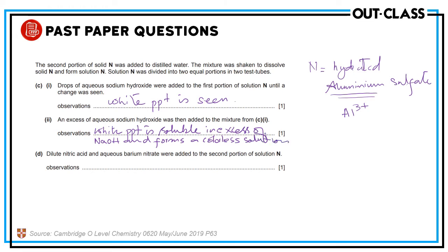Add dilute nitric acid and barium nitrate. Barium nitrate is the test for sulfate ions. Since sulfate ions are present in the solution, a white precipitate is seen.